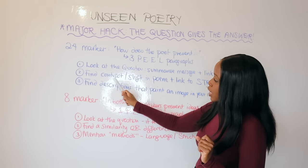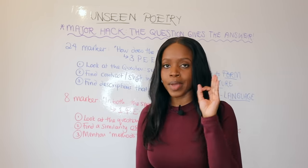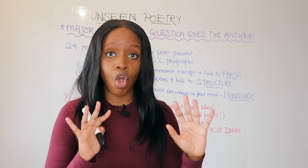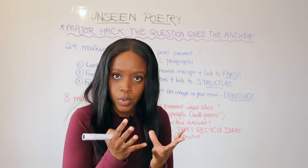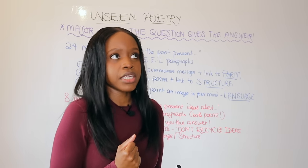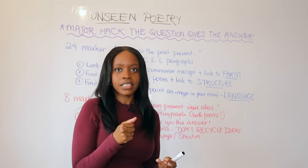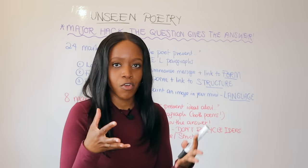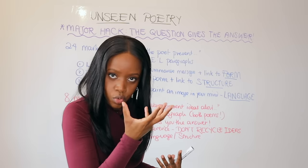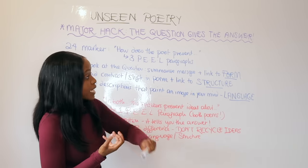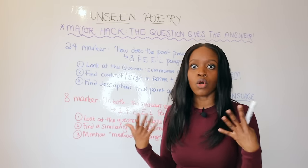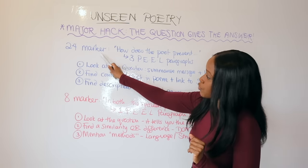For your second PEEL paragraph, find a contrast or shift that occurs in the poem. Every poem ever written always has some kind of shift or turning point — we call this volta. Contrast doesn't necessarily mean opposites; it might be that the poet begins with a happy relationship and ends on a negative note, or introduces a different image. Find that shift in the beginning, middle, or end — this is your structure paragraph.